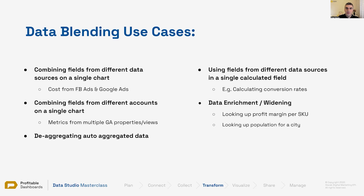Another example would be looking up population for a city. Some websites — like news, broadcasting, or government websites with a lot of traffic — might want to look at KPIs like market share: how much traffic are we getting from a city compared to the actual population? That population data isn't in Google Analytics, but it's available in a third-party data source. For an e-commerce store, we might want to look up user data from a user ID — we have it in Google Analytics and in our CRM, but we can't have PII in Google Analytics. We can look up data points like name, surname, email address, and lifetime value from the CRM and merge it with our web data by joining on the user ID — widening the data and bringing in new fields.